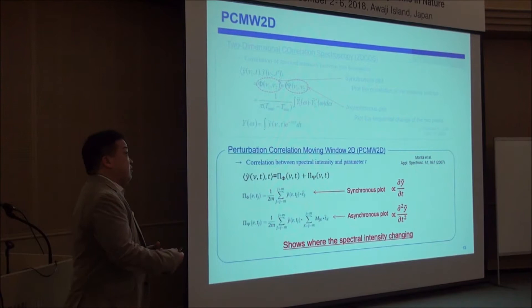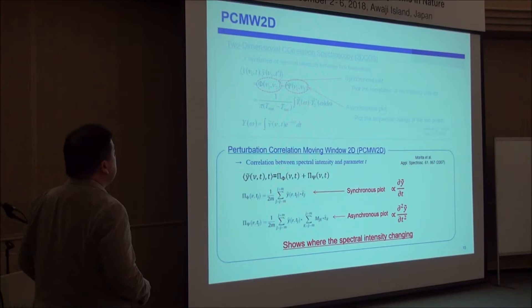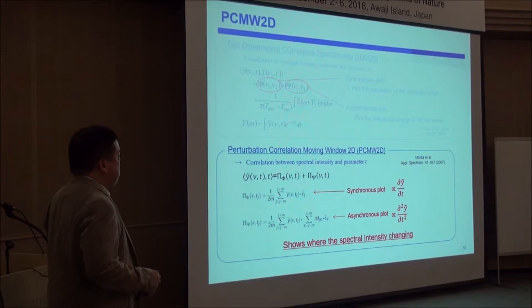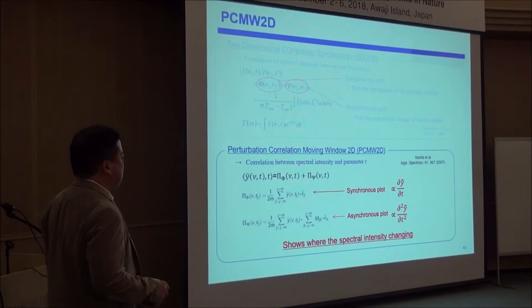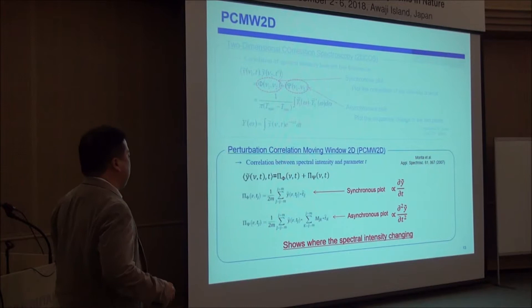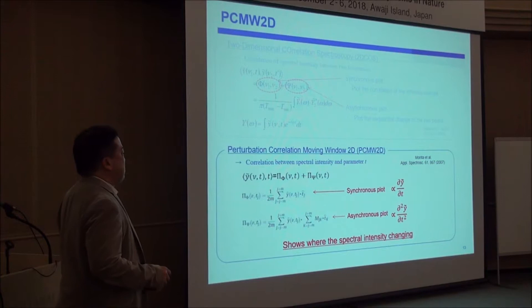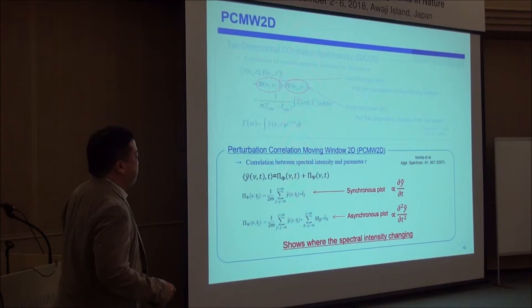For more detailed spectroscopy, we applied an analytical statistical method — in this case PCMW2D, a kind of two-dimensional correlation spectroscopy. Simply speaking, it shows the derivative of spectral changes as a function of an external parameter. In the synchronous plot it shows the first derivative of absorption coefficient against humidity. Let me show the result.